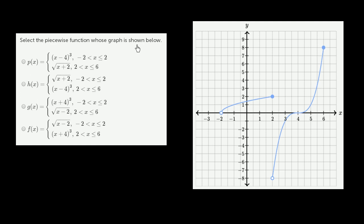Select the piecewise function whose graph is shown. We have this piecewise continuous function. It's not defined for x being negative 2 or lower. Starting at x greater than negative 2, it starts being defined and is continuous all the way until x equals 2. Then we have a discontinuity, and it starts being defined again, continuous until x is greater than 6, where it's once again undefined. Let's think about which of these functions describes this graph.